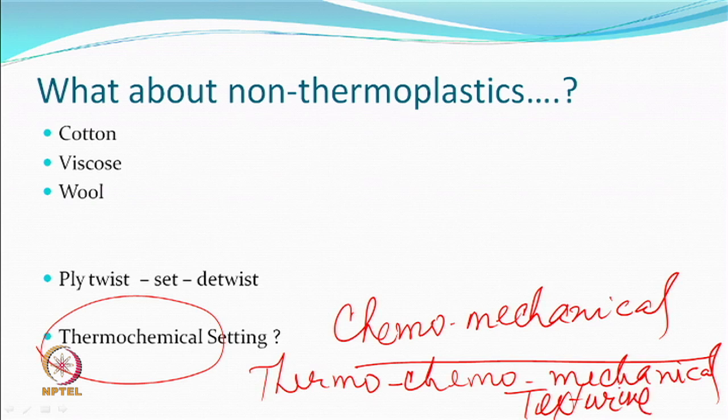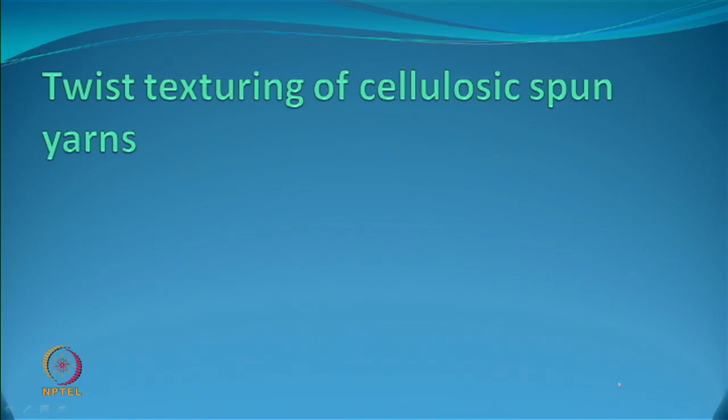One important thing is that chemicals now have to come into play. Whenever chemicals come into play, you are not dealing with a completely dry process, so whatever difficulties come with a wet process will have to be addressed. Although chemical reactions may also take place quickly, the time requirements here are not going to be easily comparable with the thermal system. Let us look at texturing of cellulosic spun yarn — which means cotton, viscose, and such materials.